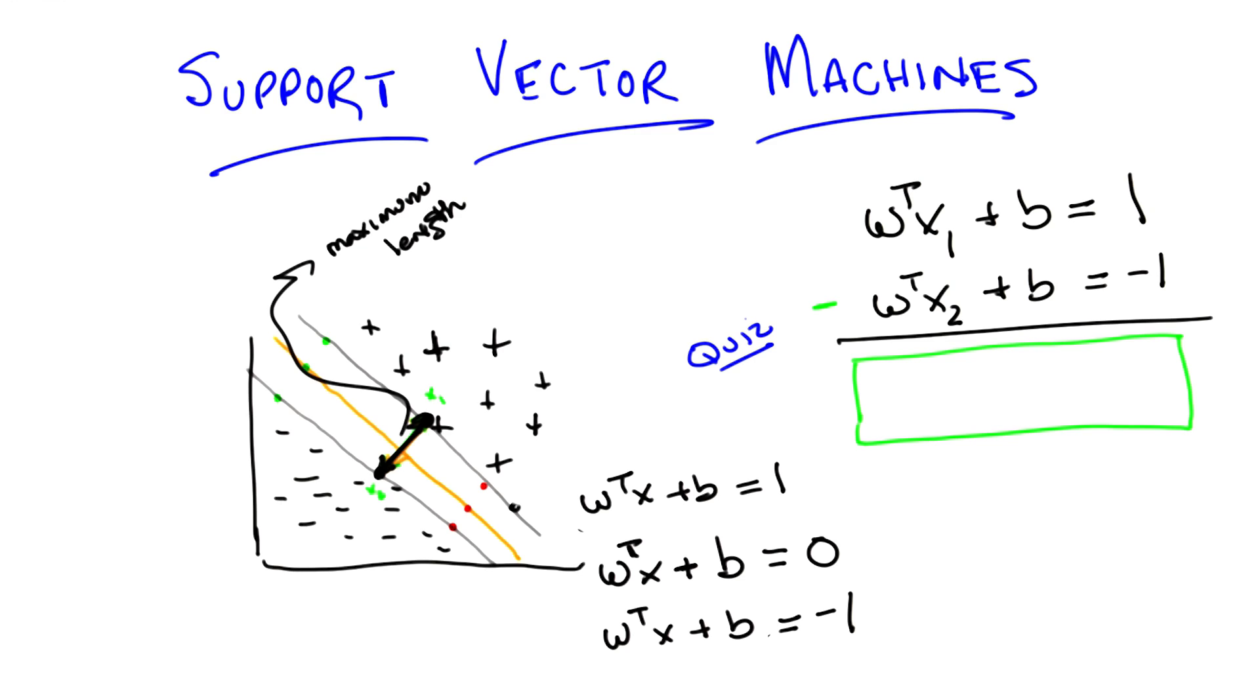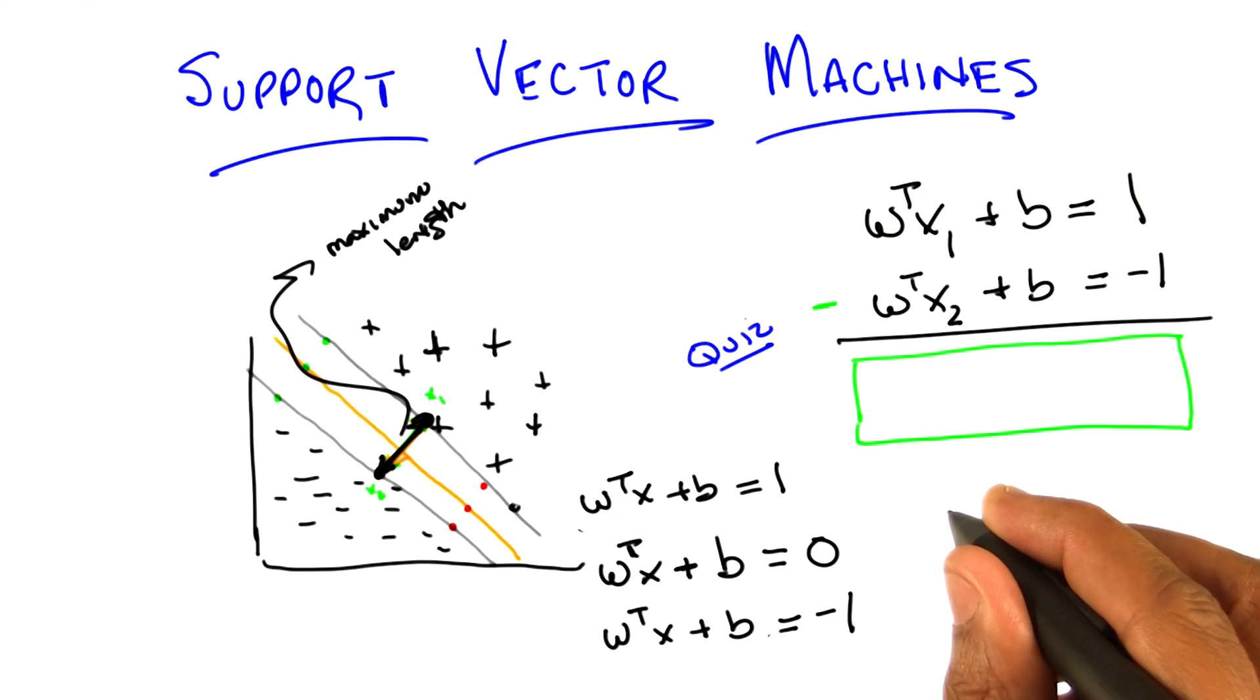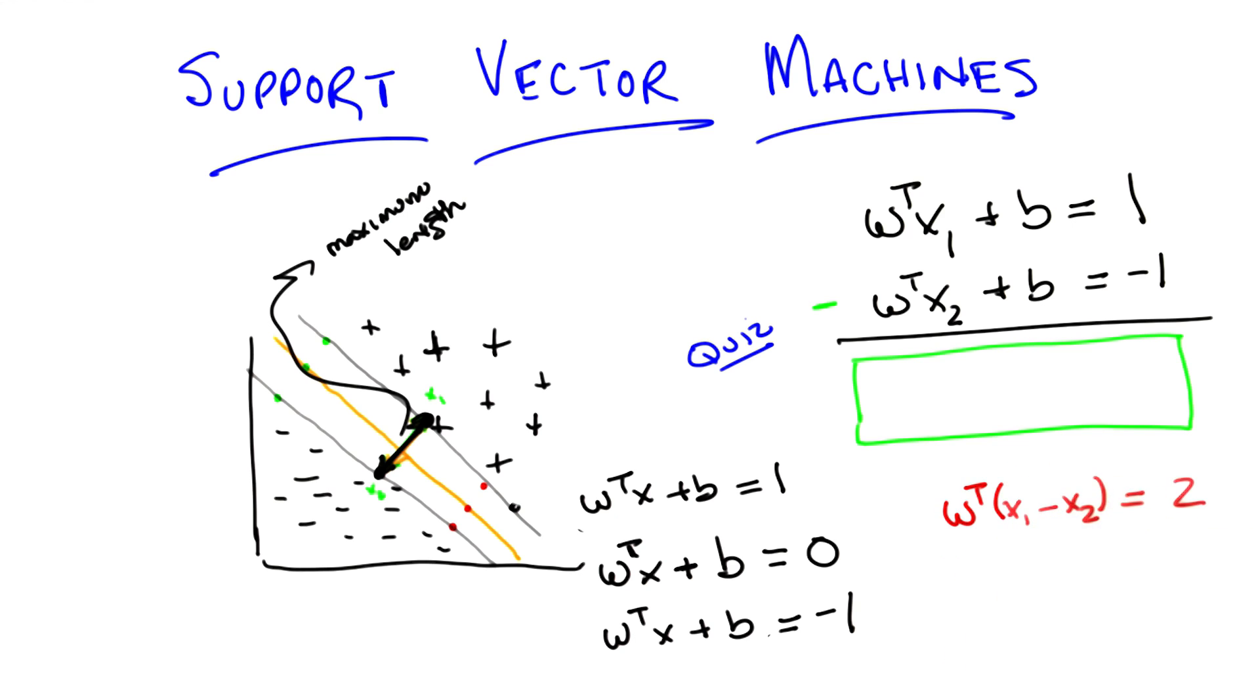That's just the norm of x1 minus x2. But the difference between these equations is going to be w transpose. Why don't I write down what you're telling me over here, and then we can put the final answer in the box. Okay, so w transpose x1 minus x2 equals 2. Right, you used the power of subtraction to make that work. So that's the difference between those two equations.